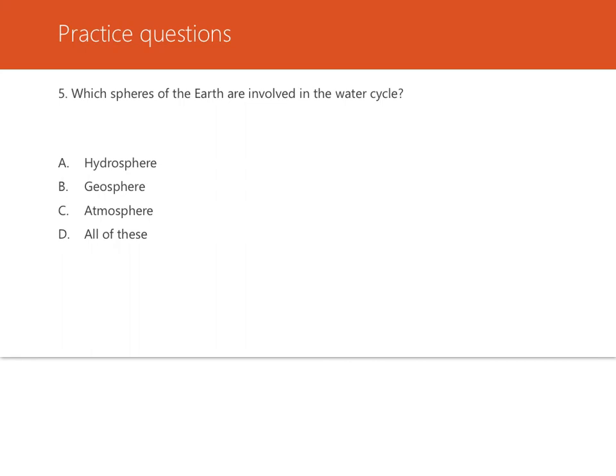Last question, number five. Which spheres of the Earth are involved in the water cycle? Is it the hydrosphere, the geosphere, the atmosphere, or all of them? It's going to be all of them. All of them are involved in the water cycle. Remember that water runs down a land surface. When it does that, it's moving from the geosphere to the hydrosphere. And water that evaporates from the surface of a lake is moving from the hydrosphere up into the atmosphere. And then water that falls as rain is moving from the atmosphere down to the land, to the geosphere, and then back into the hydrosphere. So it's going to be all of them, y'all.